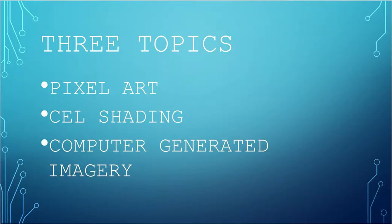In this presentation, we're going to go over three different kinds of digital art. The first being pixel art, the second being cel shading, and the third being CGI or computer-generated imagery. In the field of digital art, there is a lot of history behind the many aspects, such as when and where it began, how it became popularized, and many prime examples as to where this art style is used in the media.